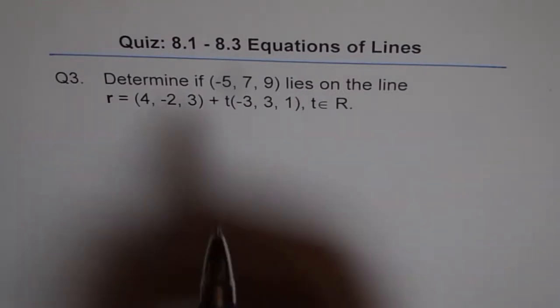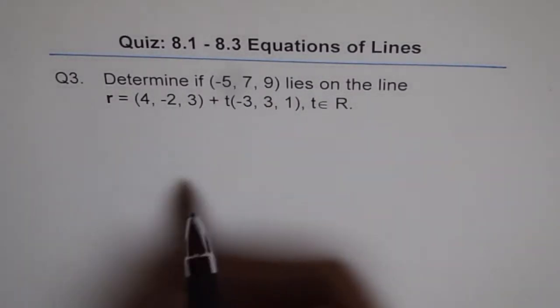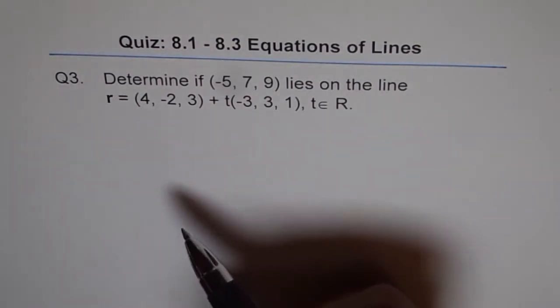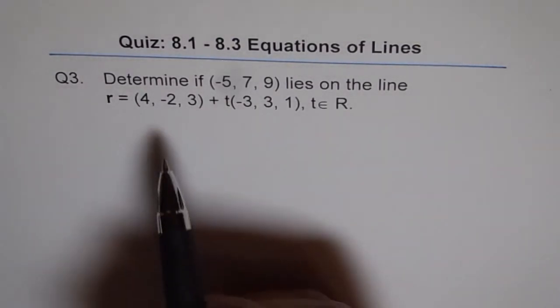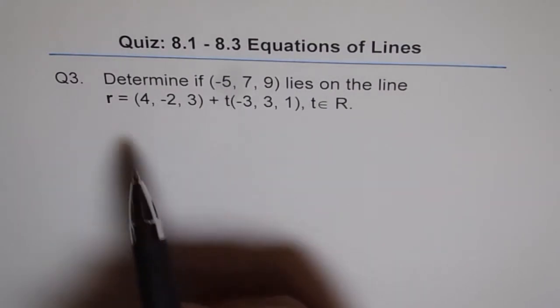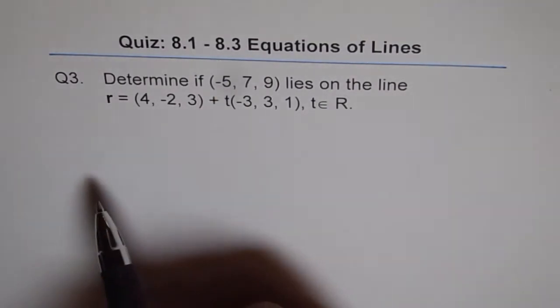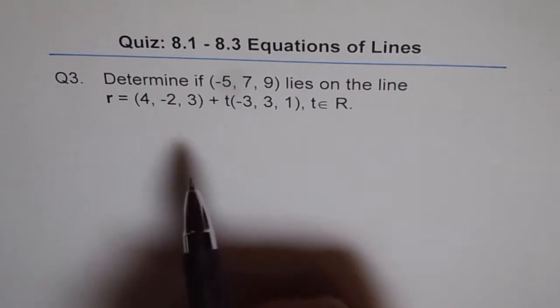Now to find whether this point lies on the given line or not, the best way is first see what value of t gives you -5 for x. So we are basically going to split this equation in the parametric form.